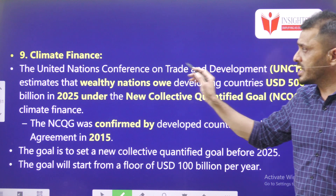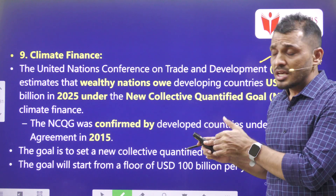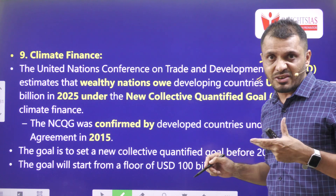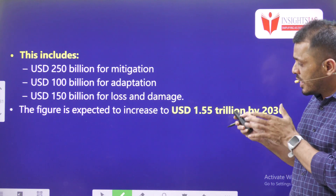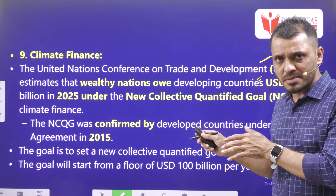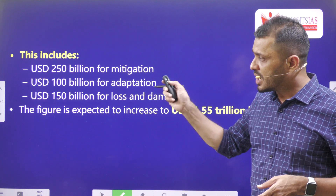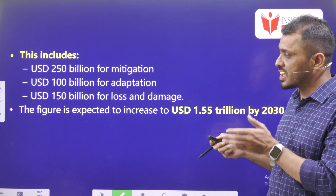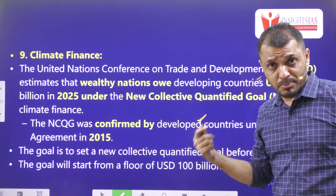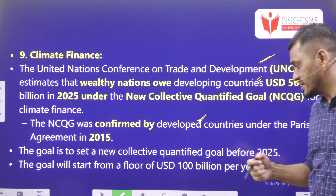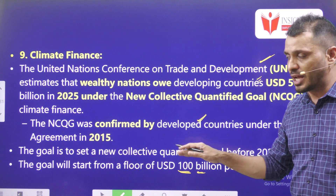The ninth outcome is Climate Finance. UNCTAD — United Nations Conference on Trade and Development — estimates that wealthy nations owe around 500 billion dollars to developing countries by 2025. By 2030, developed countries have to contribute around 1.55 trillion dollars. Out of the 500 billion dollars: 250 billion for mitigation of climate change, 100 billion for adaptation, and 150 billion for loss and damage — confirmed under the Paris Agreement 2015. The floor value is 100 billion dollars per year.